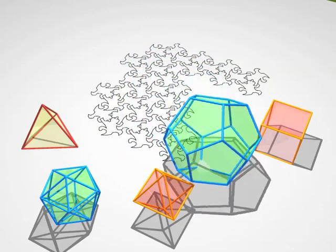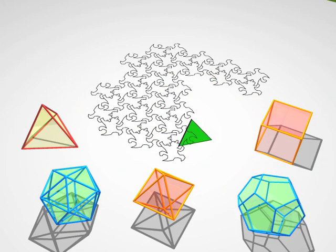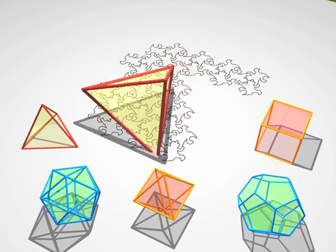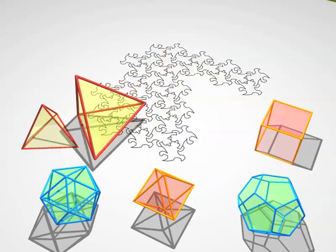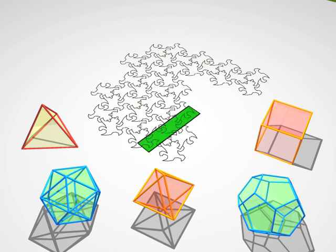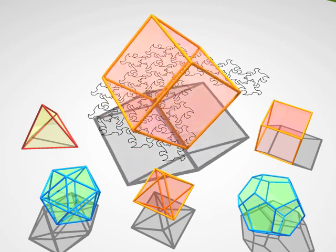Now we're going to show you some cross sections, and only cross sections, and you have to guess the polyhedron hiding behind them. That was a tetrahedron. That was a cube.